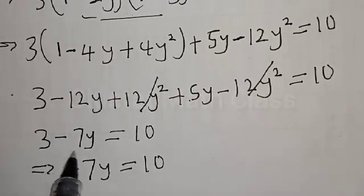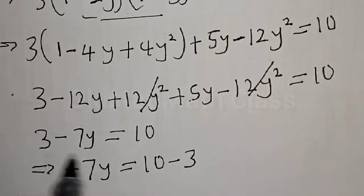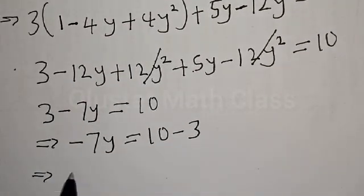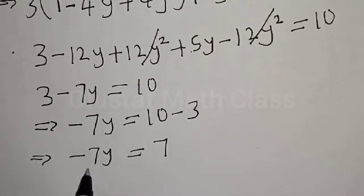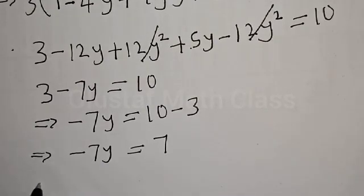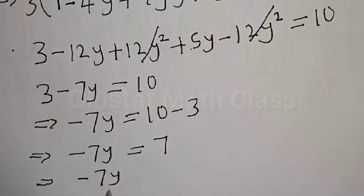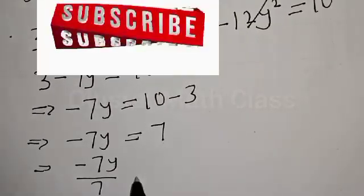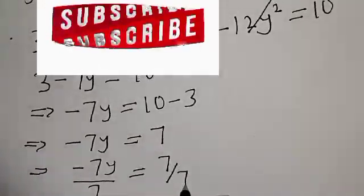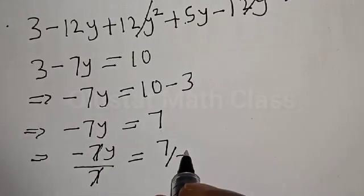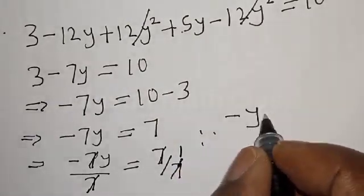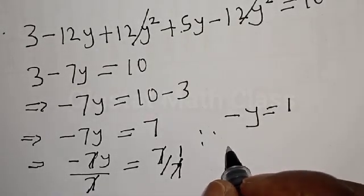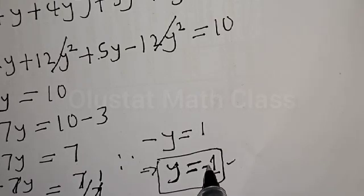So we have 3 minus 12y plus 5y, that is minus 7y, equal to 10. Minus 7y equals 10 minus 3, which is 7. Then dividing both sides by 7: minus 7y over 7 equals 7 over 7. These cancel, giving minus y equal to 1. Therefore y is equal to minus 1.